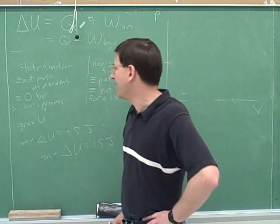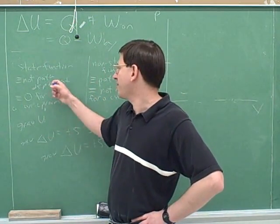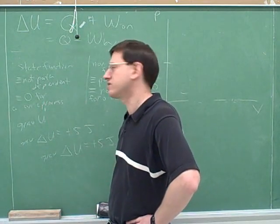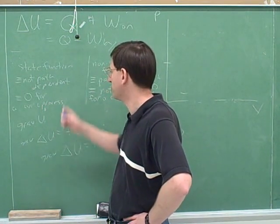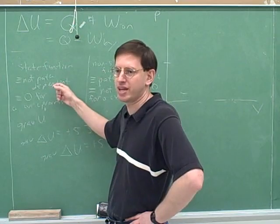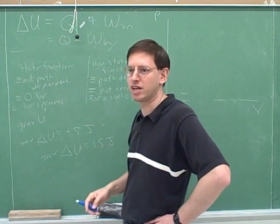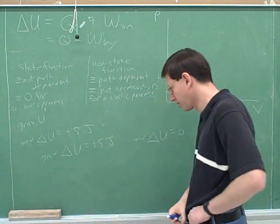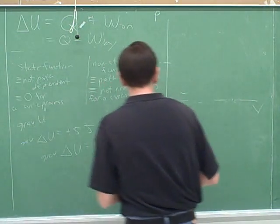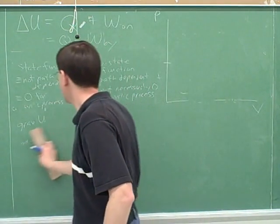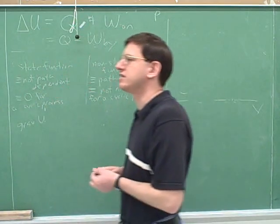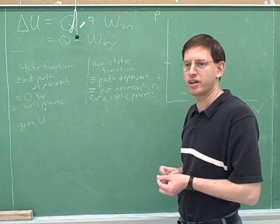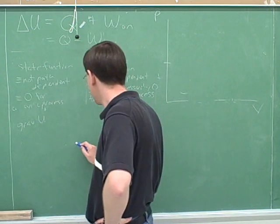Anything that's not path dependent has to be zero for a cyclic process, and vice versa. We'll just memorize that these two properties are the same thing — either one would make something a state function. Something that's not a state function is, say, the work done by friction.